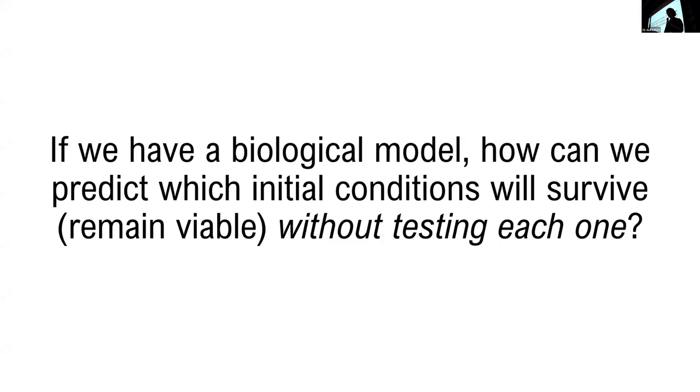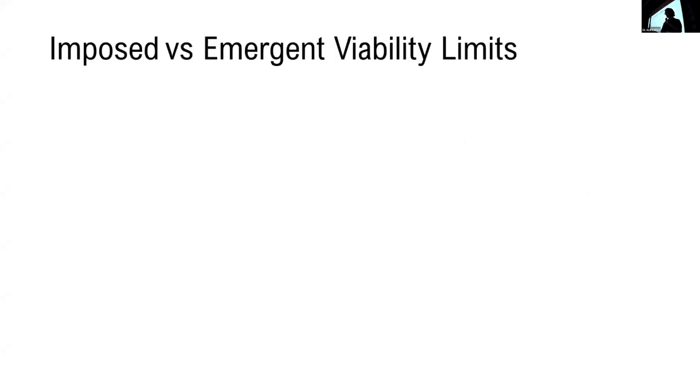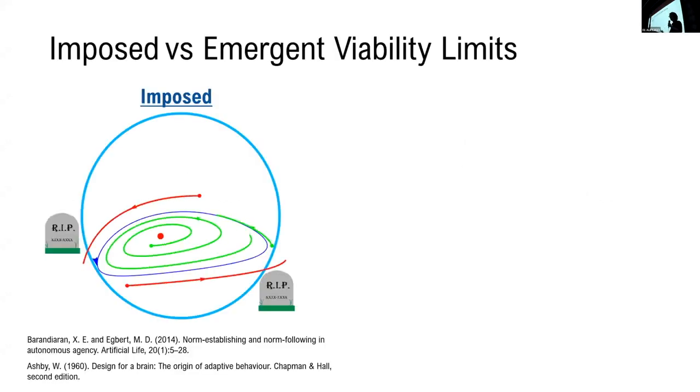The way that we answer this question depends a little bit on the modeling methodology that we're using. For example, if we have a dynamical system where we, the modelers, are saying things like a toxin cannot get to this amount, food and energy can't drop to a certain point, otherwise our agent is not viable, we're working with imposed viability limits on a dynamical system.